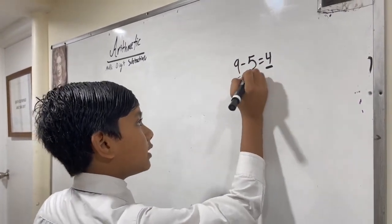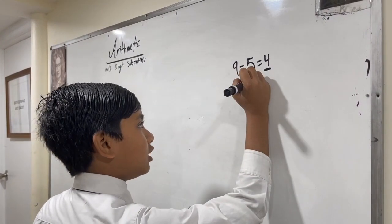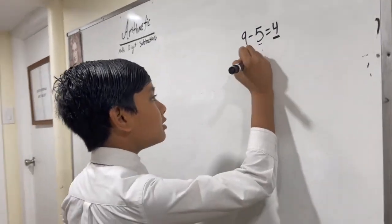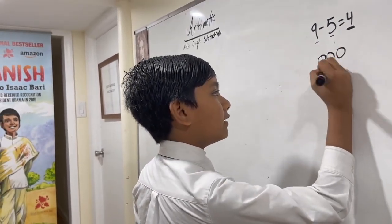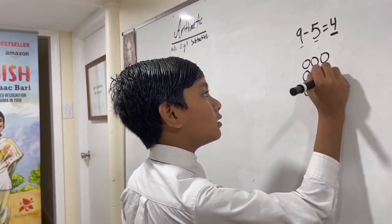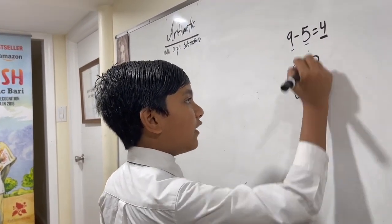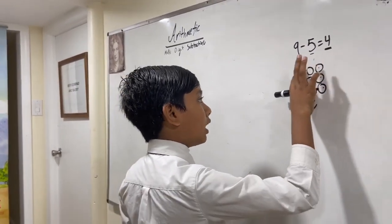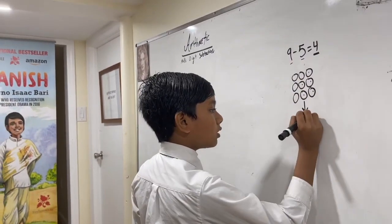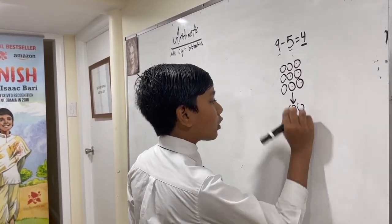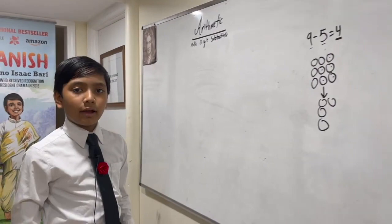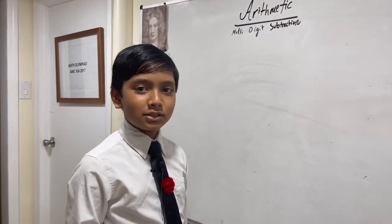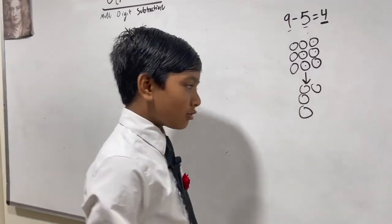These two have really complicated names—I think one of them was called a subtrahend—but you don't need to remember that. For example, in this equation we have nine, and then we're taking away five: one, two, three, four, five. So how many are there unmarked? Four: one, two, three, four are left.